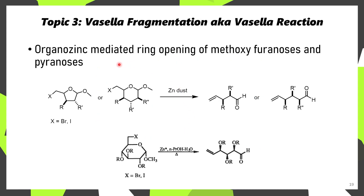The third topic for today is the Vasella fragmentation, also known as the Vasella reaction. In this chemistry we have zinc insertion into a carbon-halide bond, which is usually bromine or iodine, resulting in the organozinc species, which will then eliminate the corresponding alkoxy group, ring opening the furanose or pyranose into the corresponding vinyl aldehydes. This can be useful as these cores are widely available in nature, and it's a good way to set the stereochemistry of the resulting alkene-containing aldehydes.